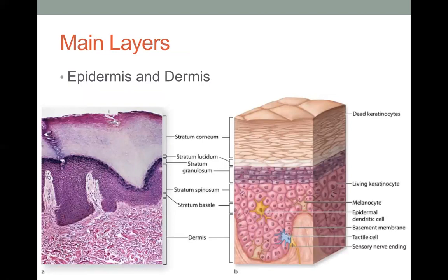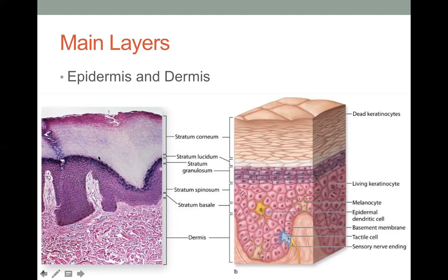The skin has two main layers: the epidermis and the dermis. The outermost layer is the stratum corneum, followed by the stratum lucidum — the pink layer, which is only present in thick skin. Next is the stratum granulosum, then the stratum spinosum, which is the thickest layer of the epidermis. The stratum basale is adherent to the dermis.